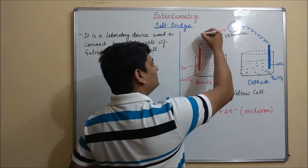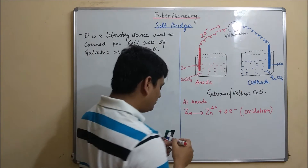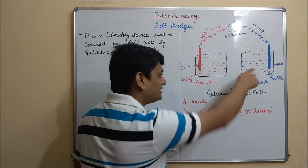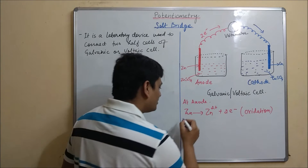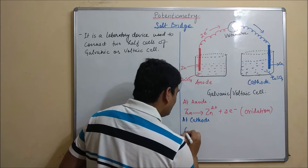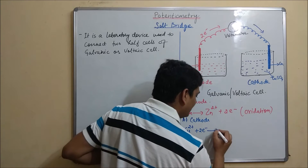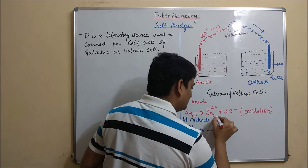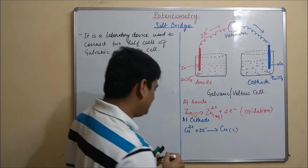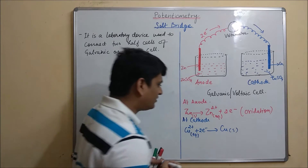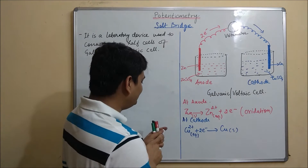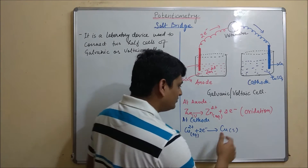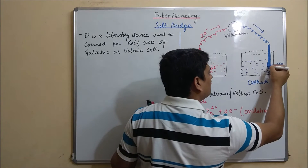These two electrons will flow through the circuit and ultimately go to the cathode. After reaching the cathode, these two electrons will be taken up by copper. At the cathode, the reaction is: Cu²⁺ + 2e⁻ → Cu (solid). So here zinc is solid and Zn²⁺ is in aqueous form, while Cu²⁺ is in aqueous solution. After this reaction, Zn²⁺ production takes place at the anode and deposition of Cu occurs at the electrode.